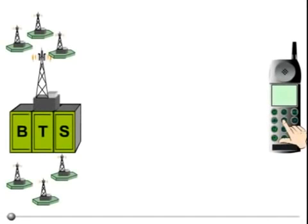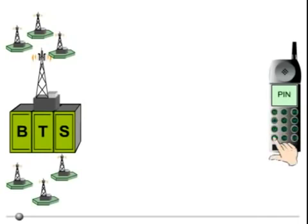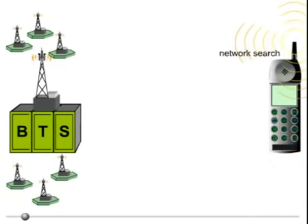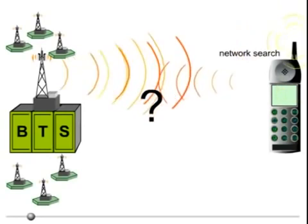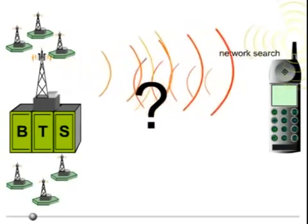After the subscriber has switched on his mobile station and typed in his PIN code, the mobile station searches for a network. But how does it log on to the network the subscriber is registered with?